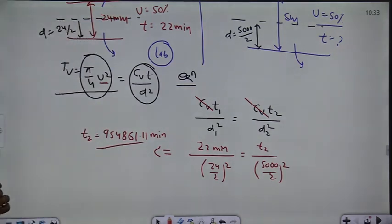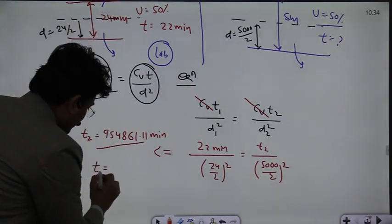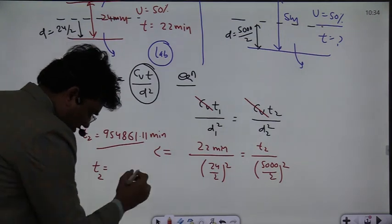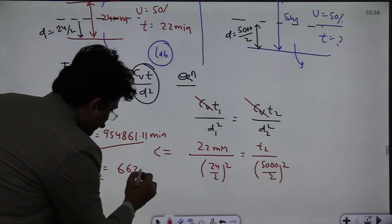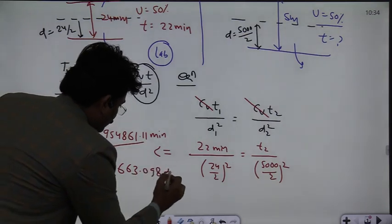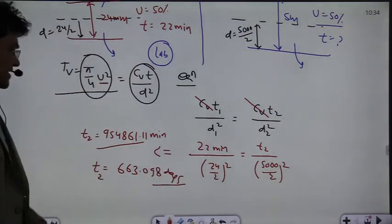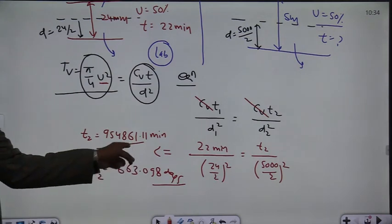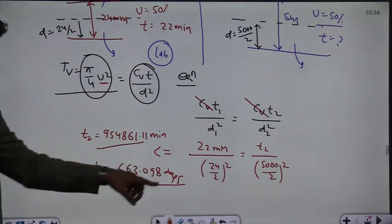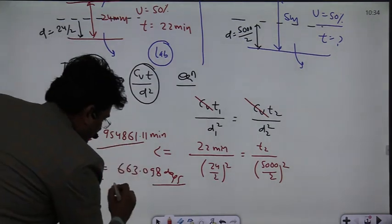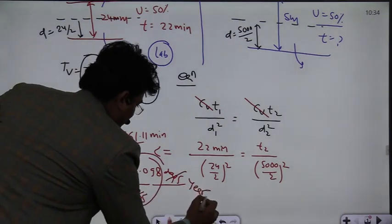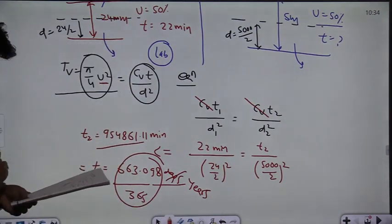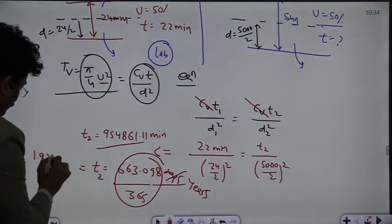For the 5 meter layer, 50% consolidation, if you change the unit then you will have 663.098 days. And to convert to years, divide by 365, then the result will be 1.82 years.